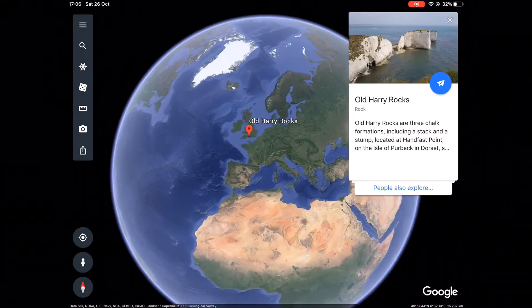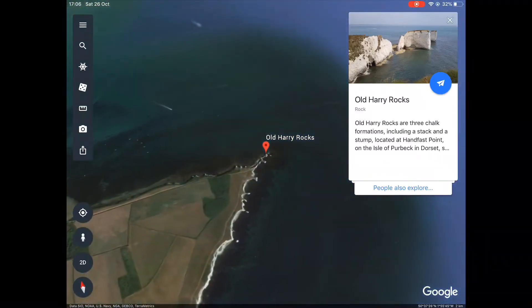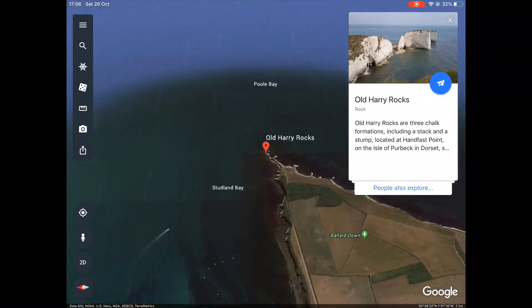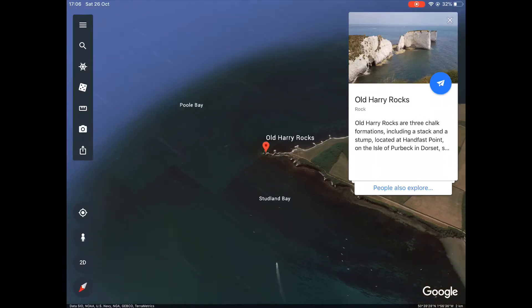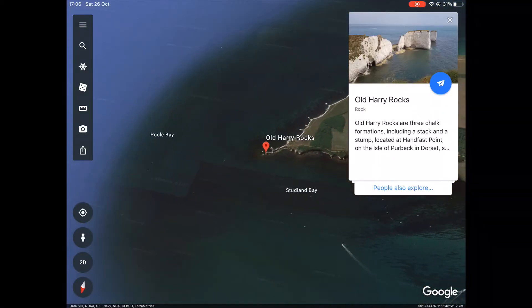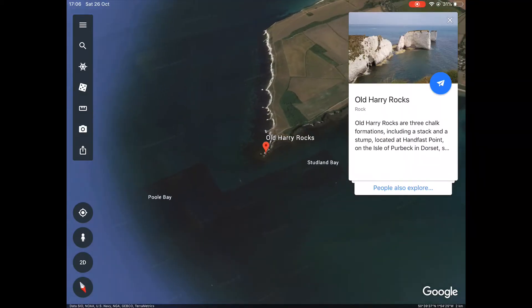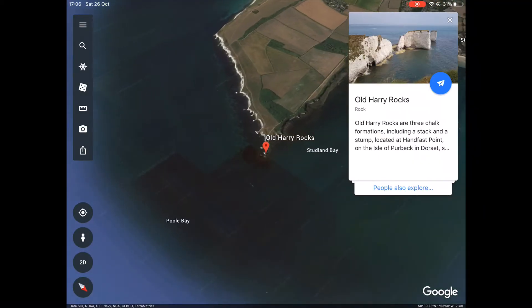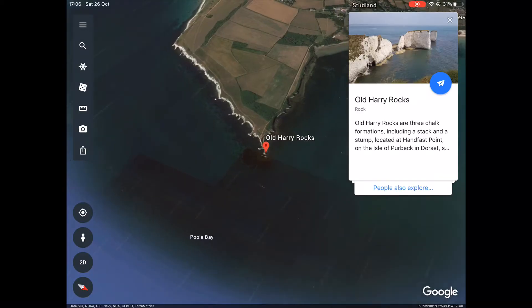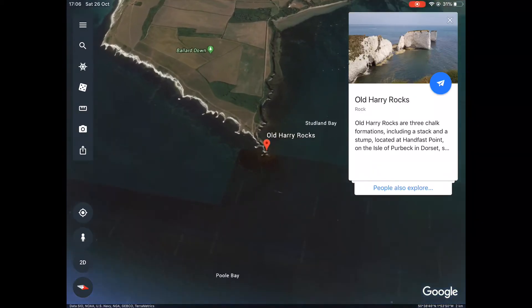A famous UK example of this coastal feature is Old Harry located in the south of England. This particular feature is predominantly made of chalk and is therefore less resistant and is more exposed to erosion processes taking place which has resulted in a cave and arch and stack and stump formation being created.